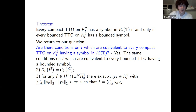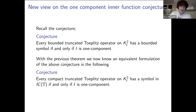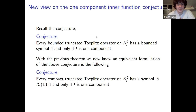In the remaining time, I'll note how this relates to the conjecture about one-component inner functions. The open conjecture states every bounded TTO on a model space has a bounded symbol if and only if I is one-component. By the previous theorem, this conjecture is completely equivalent to: every compact TTO on the model space has a symbol in I·C(T) if and only if I is one-component. It will be interesting to see if this new viewpoint makes the problem more approachable.